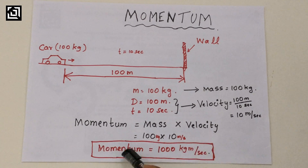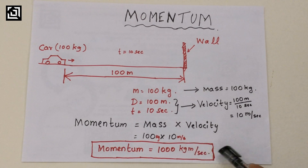The momentum is 1000 kg·m/s. Now we are talking about the momentum of a car of a particular mass — that is the impact of momentum.